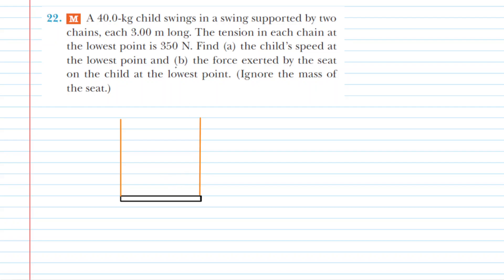Now, the question does note that the tension in each chain is 350 Newtons. Notice there are two chains connected to this swing, so we're going to draw two tension forces, one on the left side of the swing and one on the right side of the swing.